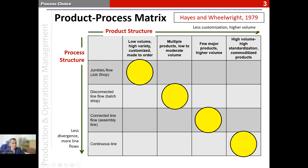Along the columns we have what is called the product structure. The product structure is described in terms of the different dimensions we talked about in the very first video — dimensions such as volume, variety, level of customization, and so on. The very first column is low volume, high variety, customized products, and as we move towards the right, the rightmost column has high volumes, high standardization, commodity products.